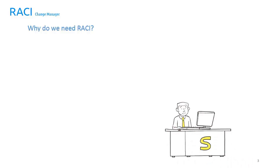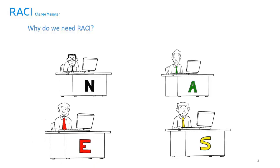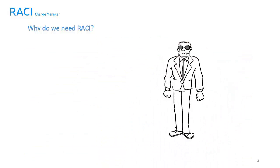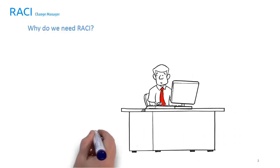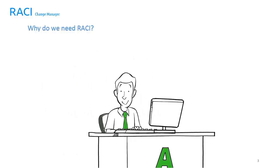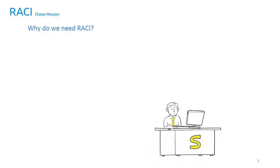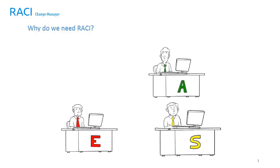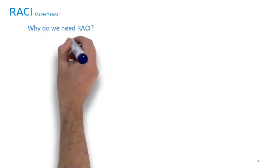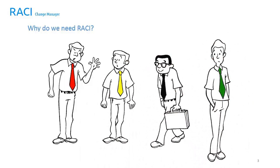I would like to introduce you to somebody, nobody, anybody, and everybody. They all work in a very busy company just like yours. There was a very important job to be done. Everybody was asked to do it. Everybody was sure that somebody would do it. Anybody could have done it. But nobody did it. Somebody got angry about that because it was everybody's job. Everybody thought anybody could do it, but nobody realized that everybody wouldn't do it. It ended up that everybody blamed somebody when nobody did what anybody could have done. Sounds like your company?